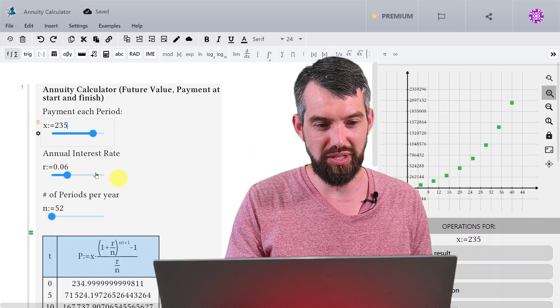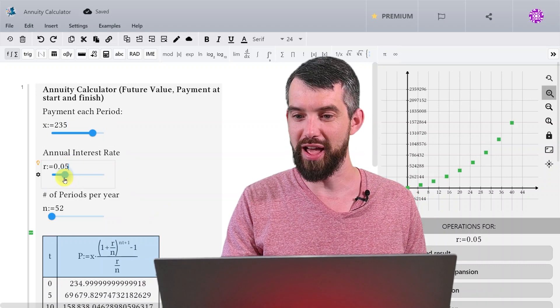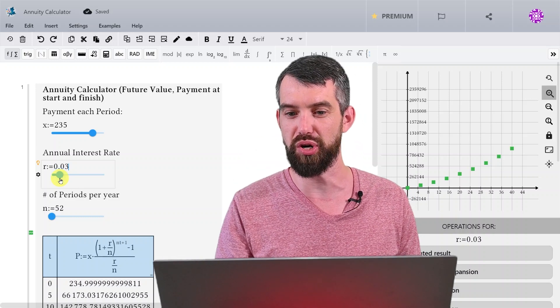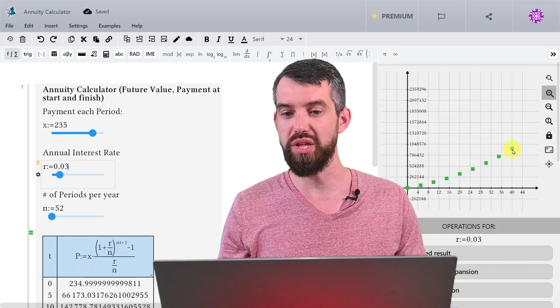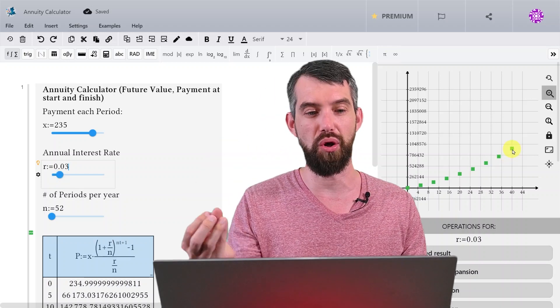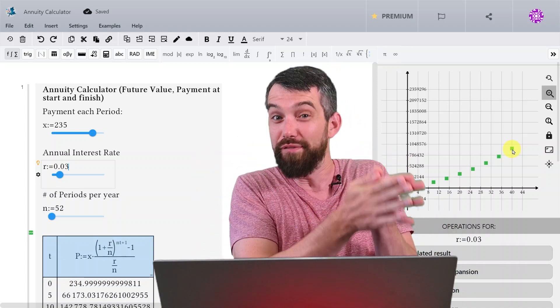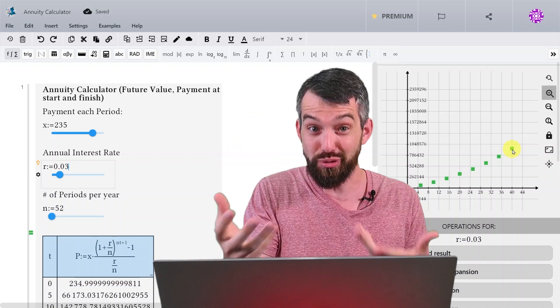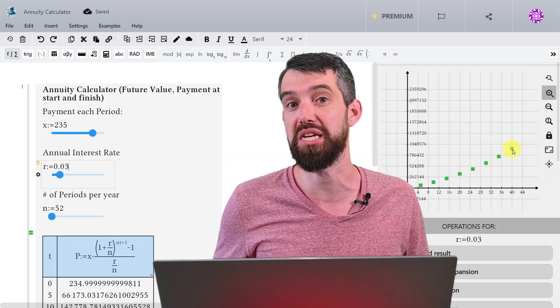And then the other thing we can play around with is our slider here on the annual interest rate. If I slide it down, 5% interest, 4% interest, 3% interest, you see how much it starts to hurt things. So 3% interest versus 6% interest, well, now after 40 years, you're making less than a million dollars with this same payment. And so the relationship between how much you're investing per week and what you anticipate the interest rate over the length of your investment to be is going to be actually very important to this particular relationship.